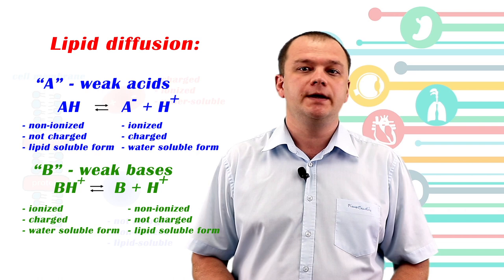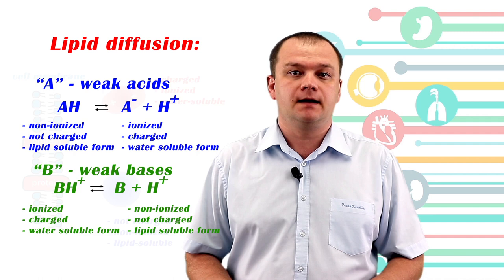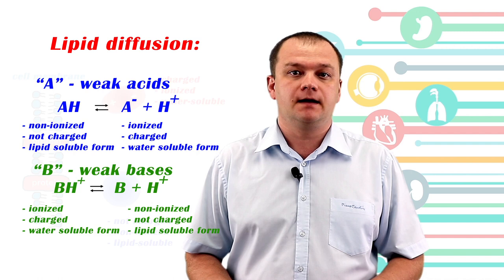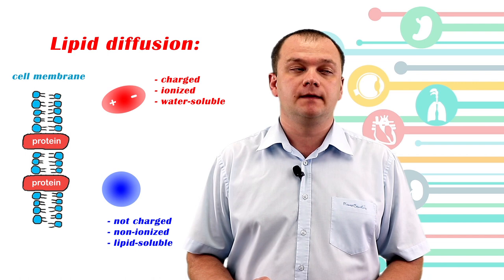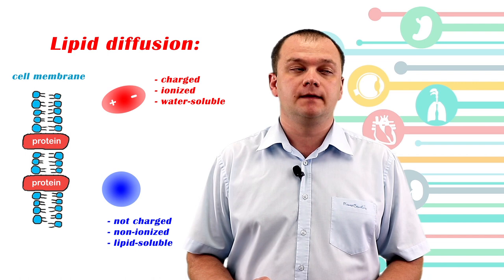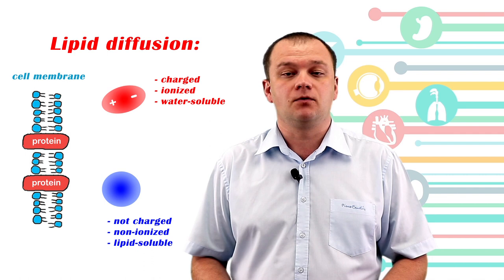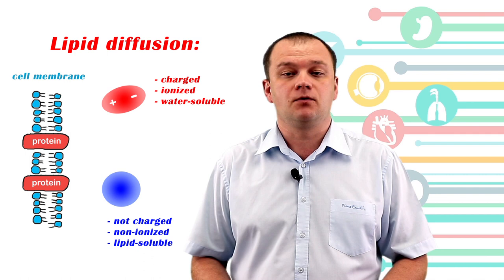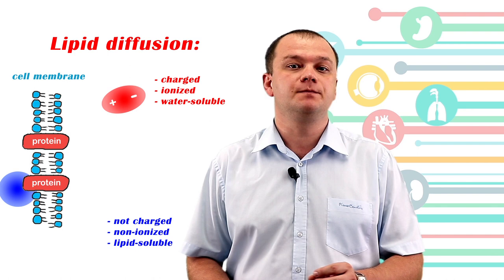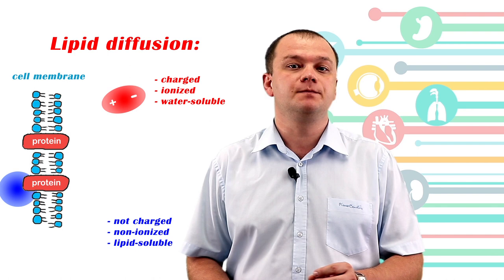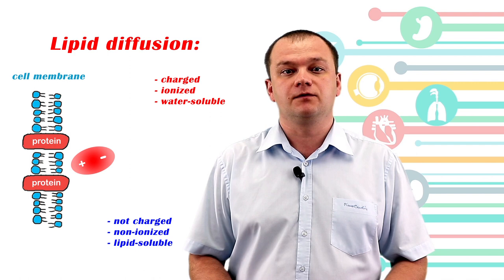Weak acids and weak bases are drug molecules which gain or lose electrical charge. Their charge or ionization depends on the pH of the environment where they are present, and also depends on the pKa — the pH at which 50% of the drug is in ionized form and 50% in non-ionized form. Only the non-ionized form of a drug is able to cross or penetrate biomembranes, while the ionized form is better renally excreted because it is more water-soluble.